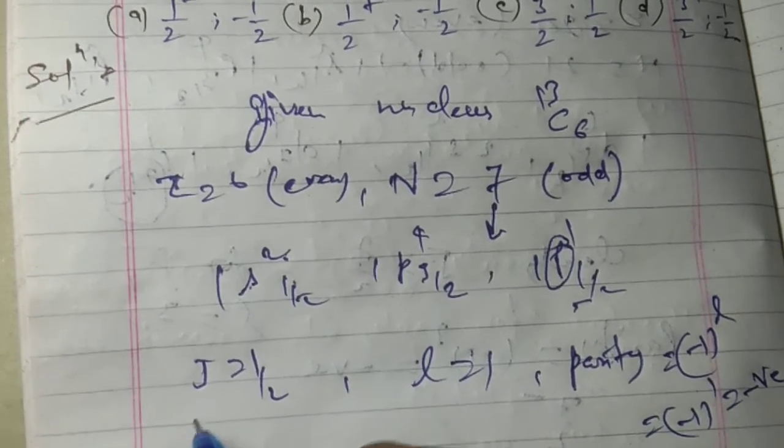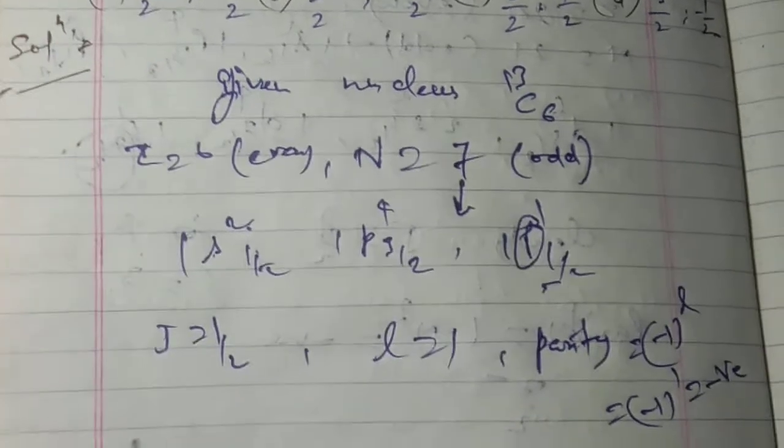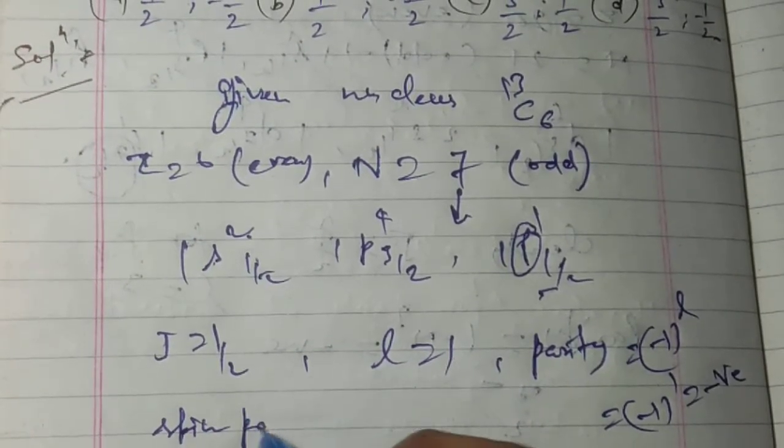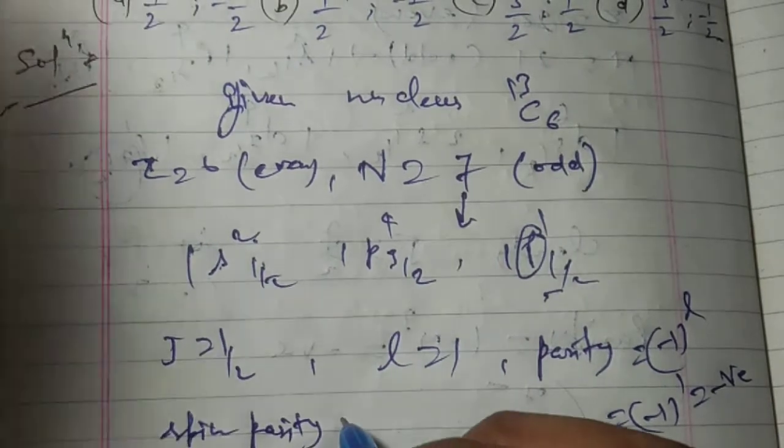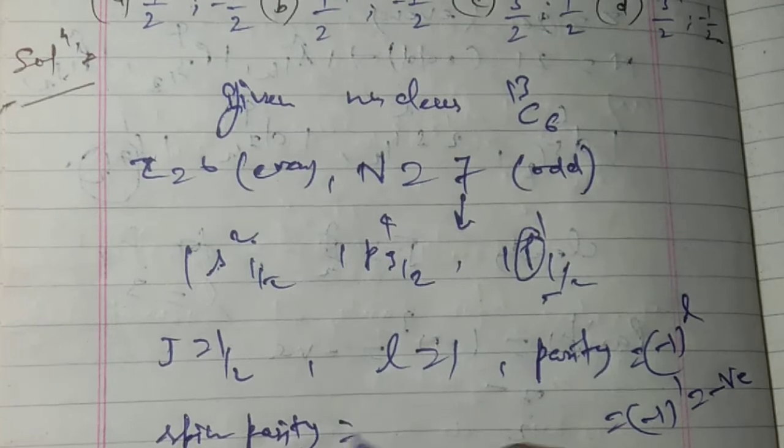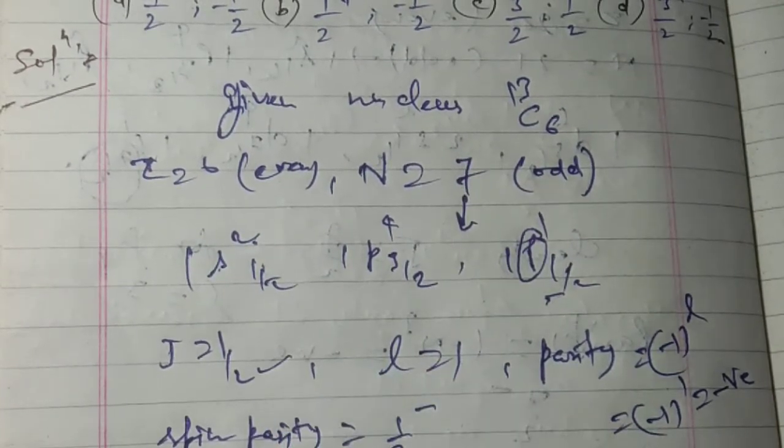So the spin-parity of the ground state is 1/2⁻.